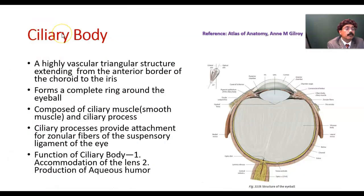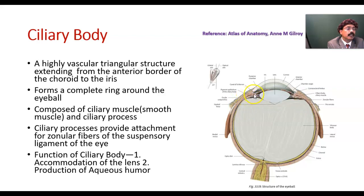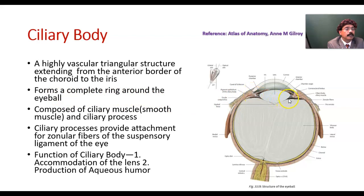The ciliary body — what is the ciliary body? This is the ciliary body. It is a triangular structure extending from the anterior end of the choroid. So from the anterior end of the choroid we will get the ciliary body. Choroid extends up to the ciliary body here. It forms a complete ring around the eyeball.